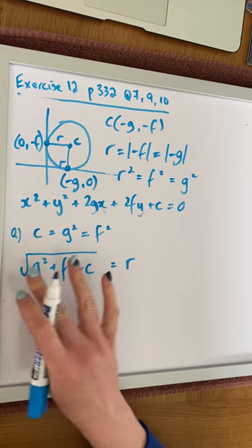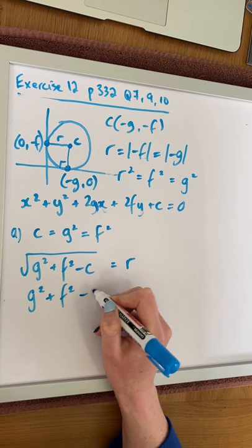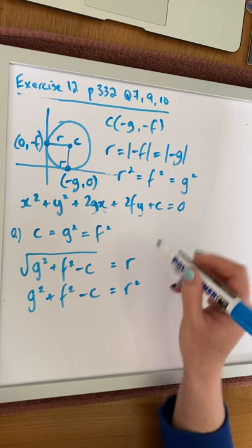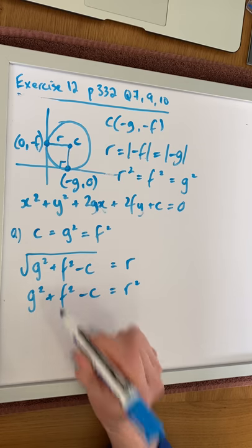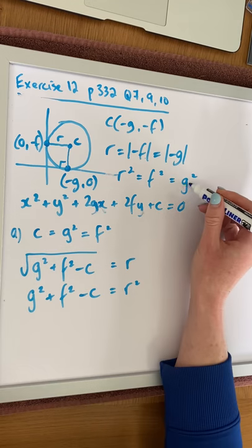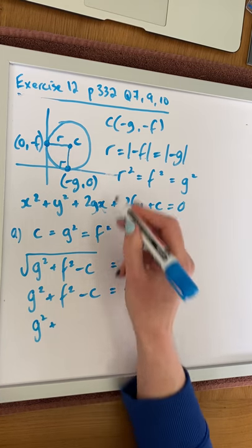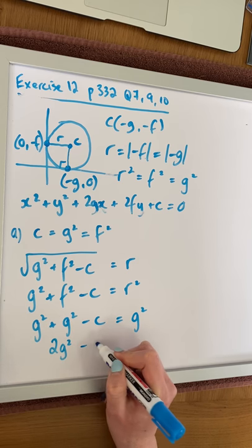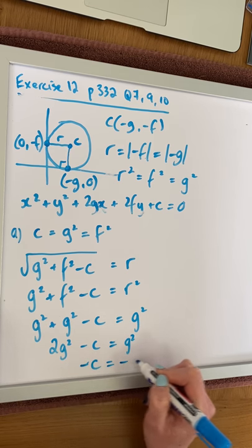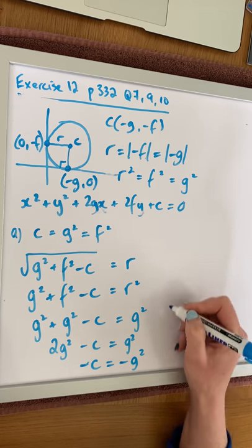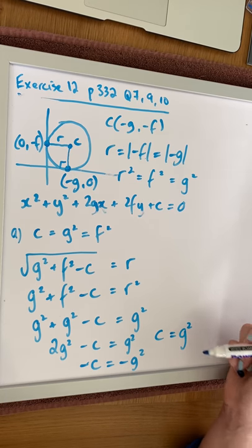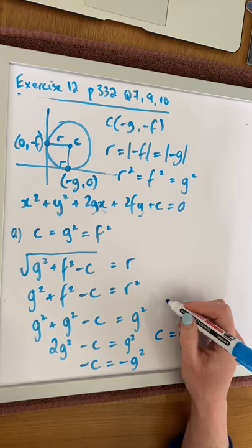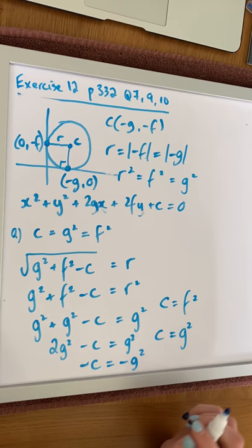To get rid of the square root sign, we square both sides to get g² + f² - c = r². We replace r² with g² since they're equal: g² + f² - c = g², which gives 2g² - c = g². Bringing 2g² across: -c = -g², therefore c = g². You repeat the process replacing g with f² to also prove that c = f².